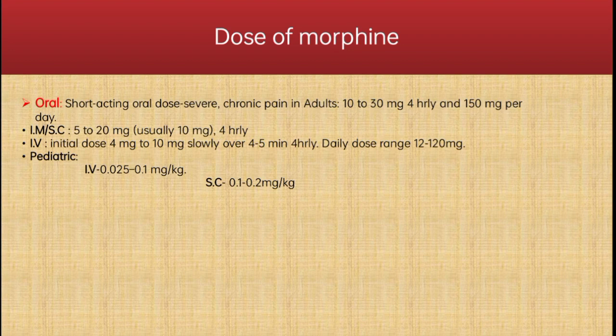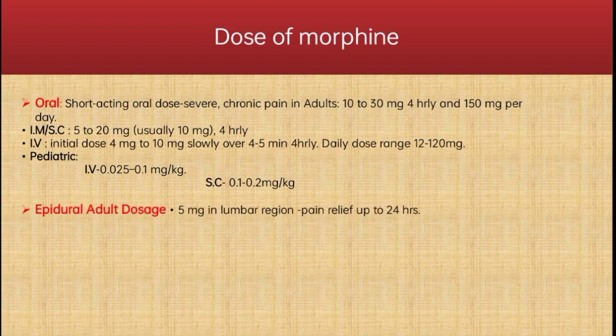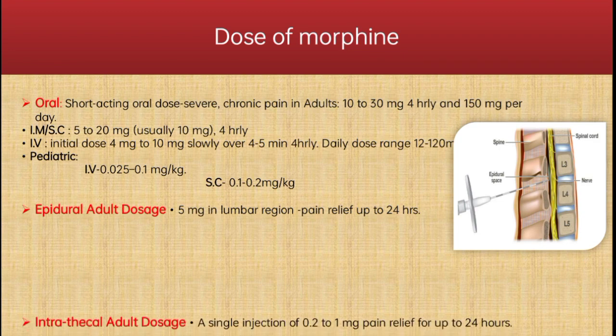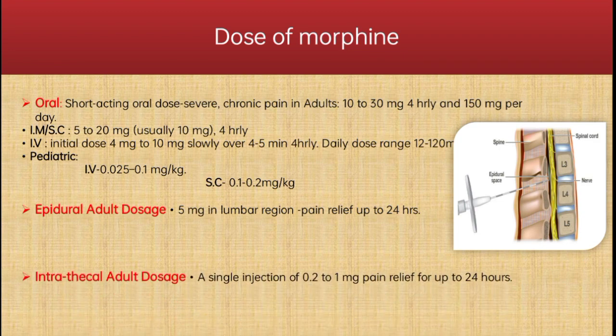The intramuscular or subcutaneous dose is 5–20 mg per 4 hours. Intravenously, the initial dose is 4–10 mg given slowly over 4–5 minutes per 4 hours, with a daily dose range of 12–120 mg. In children, the IV dose is 0.025–1 mg per kg, while the subcutaneous dose is 0.1–0.2 mg per kg. Epidurally, the adult dose is 5 mg in the lumbar region, providing pain relief up to 24 hours. Intrathecally, the adult dose is a single injection of 0.2–1 mg to relieve pain up to 24 hours.